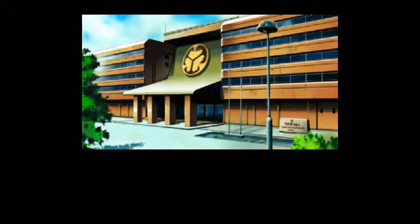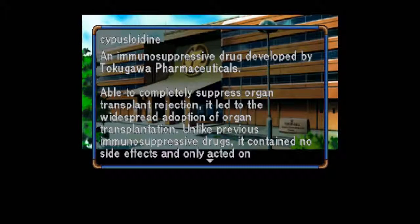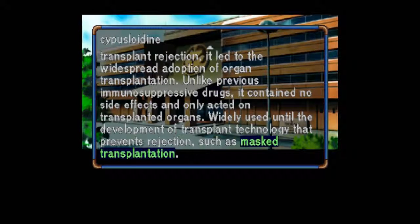Cyposloidine: An immunosuppressive drug developed by Tokugawa Pharmaceuticals. Able to completely suppress organ transplant rejection, it led to the widespread adoption of organ transplantation. Unlike previous immunosuppressive drugs, it contained no side effects and only acted on transplanted organs. Widely used until the development of transplant technology that prevents rejection, such as massed transplantation.